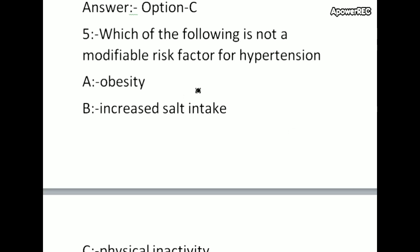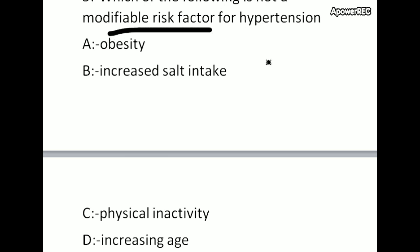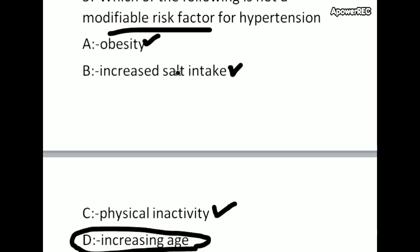Which of the following is not a modifiable risk factor for hypertension? Modifiable risk factors for hypertension we can change — but non-modifiable risk factors we cannot change, like age and genetic factors. Obesity, high salt intake, and physical inactivity are modifiable. Age is not a modifiable risk factor for hypertension.